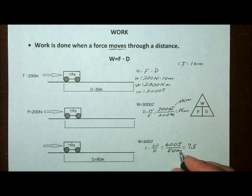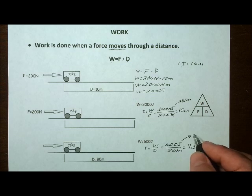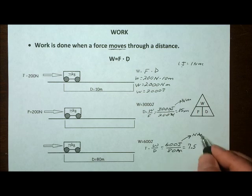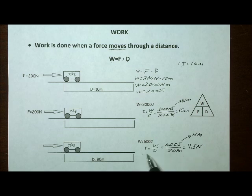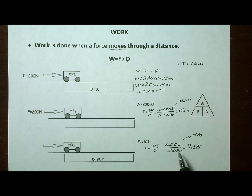Let's take a look at the unit. The unit is going to be the force unit — we can expect it to work out to newtons. Remember that the joule is really a newton meter, so meters factors out and the newton comes down, giving us 7.5 newtons. So what we're saying is: if you apply a force of 7.5 newtons to this cart and move it 80 meters, 600 joules of work is done.